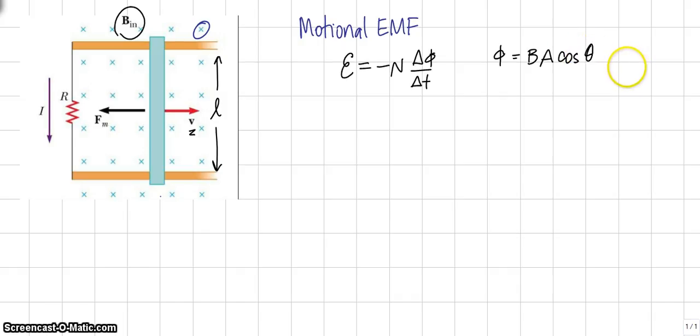In this case, since the area vector points into the page and the magnetic field points into the page, theta is zero degrees and cosine of theta is one. Also, in this case we only have one loop, so N equals one loop.